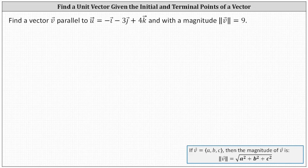Find a vector v parallel to vector u with a magnitude equal to nine. We're looking for a vector pointing in the same or opposite direction of vector u that has a length or magnitude of nine, and therefore vector v must be a scalar multiple of vector u.